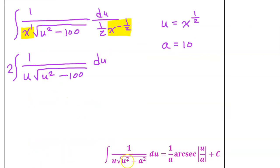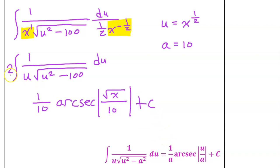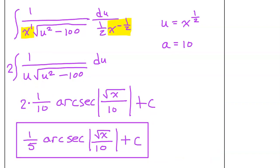This integral is a perfect match for the arc secant rule. Keeping in mind that u is equal to x to the one-half power and a is equal to 10, let's use the arc secant rule to integrate. We see 1 over a, so we will write 1 over 10 arc secant of the absolute value of u over a. That'll be the square root of x over 10 plus c. Don't forget that we have this 2 sitting out in the front — 2 times one-tenth is one-fifth, so this is the final answer.